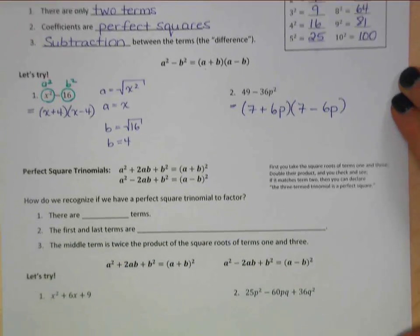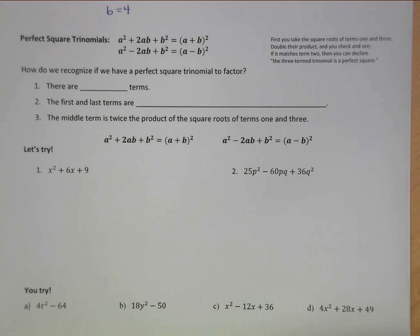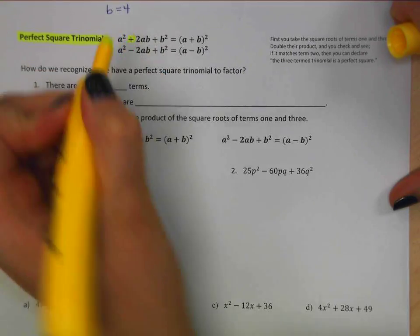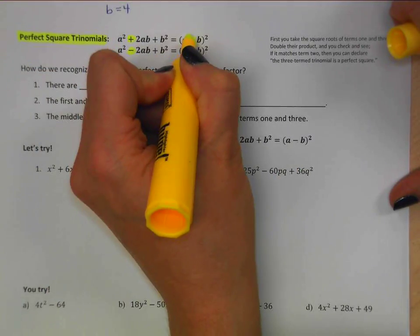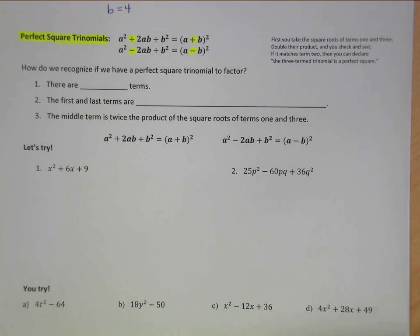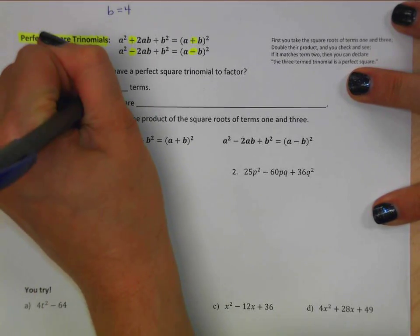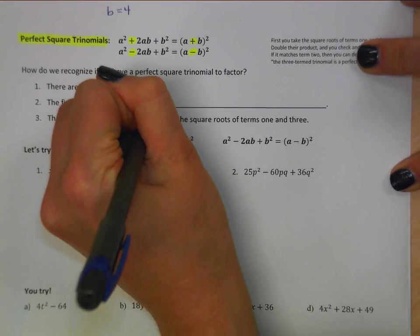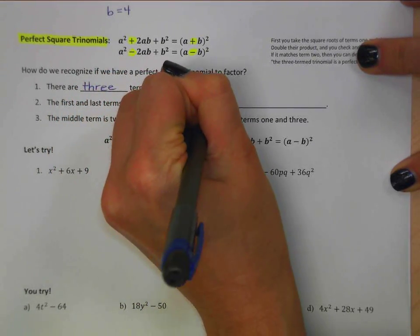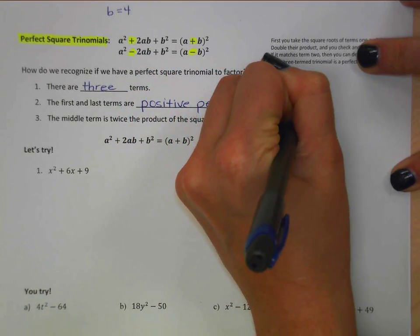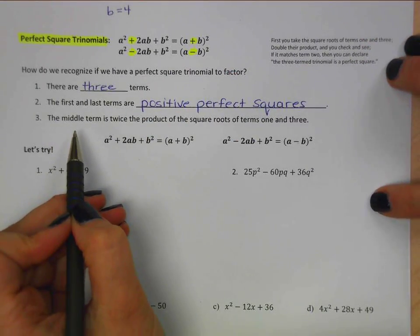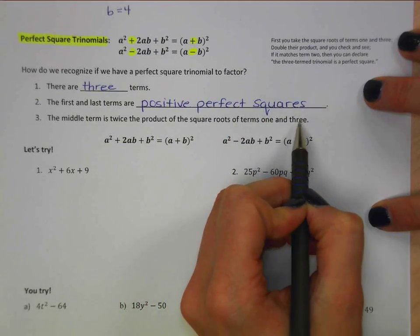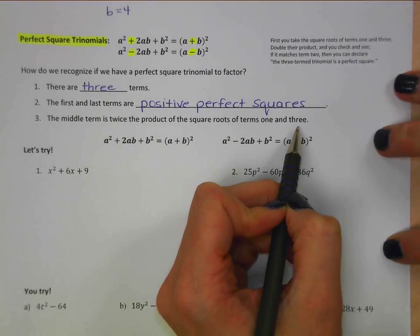The next special product is perfect square trinomials. Please note that the difference between the two equations is just plus or minus in front of the middle term: one has plus 2ab and one has minus 2ab, and that shows up in the factored form as well. How do we know if we have one of these? First, we have three terms. Second, the first and last terms are positive perfect squares. And third — the middle term is twice the product of the square roots of terms 1 and 3, where term 1 is a squared and term 3 is b squared.